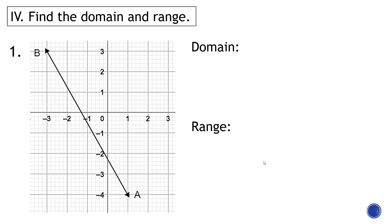For this first graph, to find the domain, look at the graph in relation to the x-axis. The left side goes to negative infinity and the right side extends to positive infinity, so the domain is (−∞, +∞) with no limit. For the range, the graph also goes to negative infinity on one end and positive infinity on the other, so the range is also (−∞, +∞).